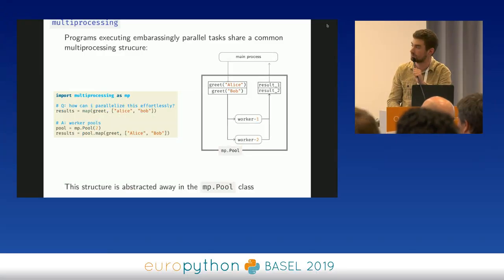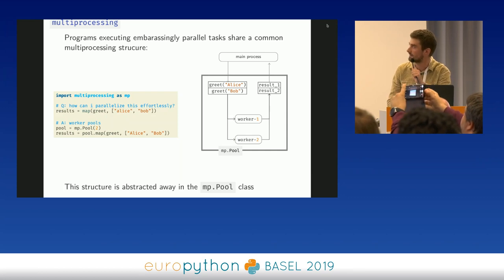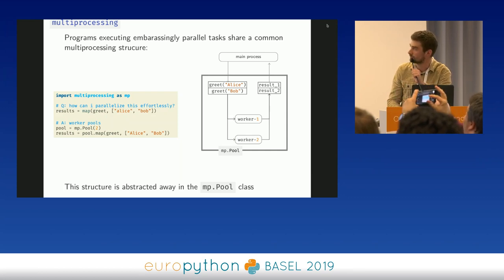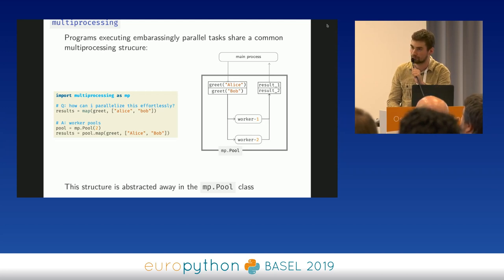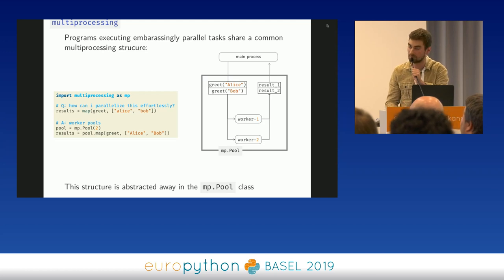This should be abstracted away, and the multiprocessing developers thought so too — they created the MP.pool class, which abstracts all of this. For example, to greet Alice and Bob, you can simply call pool.map(greet, ['Alice', 'Bob']). That runs in parallel without creating queues or processes manually.